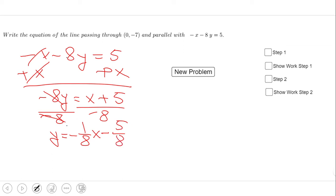This is the slope of the given equation. We can see the slope is negative one-eighth. This is the slope of line one, as I call it. Line two will have the same slope.